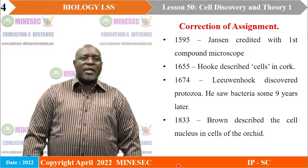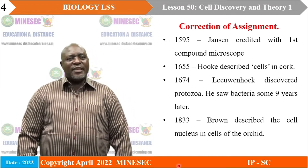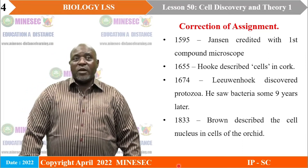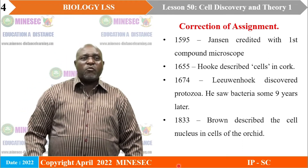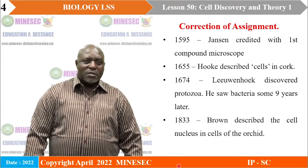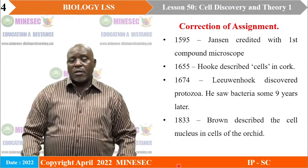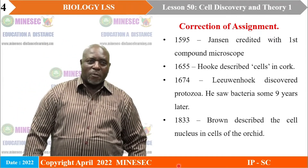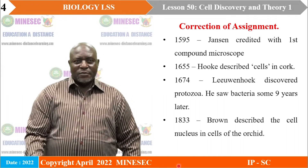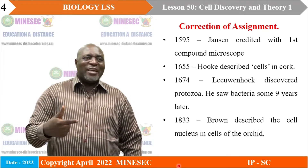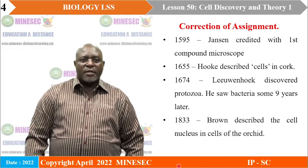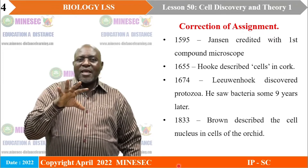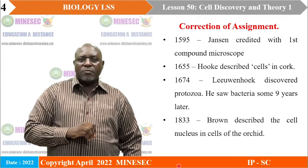We are going to look at the assignment. The first date is 1595 — remember the 15th century — when Jensen was credited with the first compound microscope. These early scientists were already thinking about microscopy. Jensen was credited with the first microscope, but he left the work halfway. Then Robert Hooke, in 1655, came and used microscopy to describe cells in a cork material.